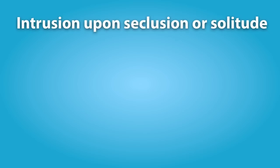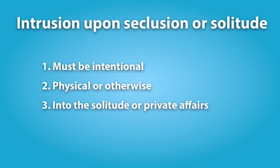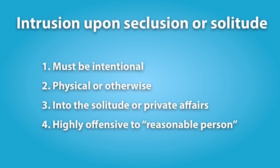First, the tort of intrusion upon seclusion. There are four elements to this tort. First, there must be an intentional intrusion — one cannot negligently invade someone's privacy. Second, the intrusion may be physical or otherwise; thus, one can satisfy this element by use of a telephoto lens or an eavesdropping device. Third, the intrusion must be into the solitude or private affairs of another — the key inquiry is whether the person has a reasonable expectation of solitude or seclusion. And finally, the intrusion must be highly offensive to a reasonable person; this is an objective standard, the so-called reasonable man.